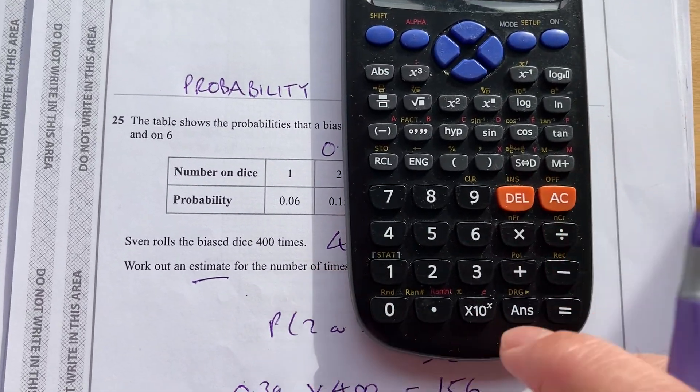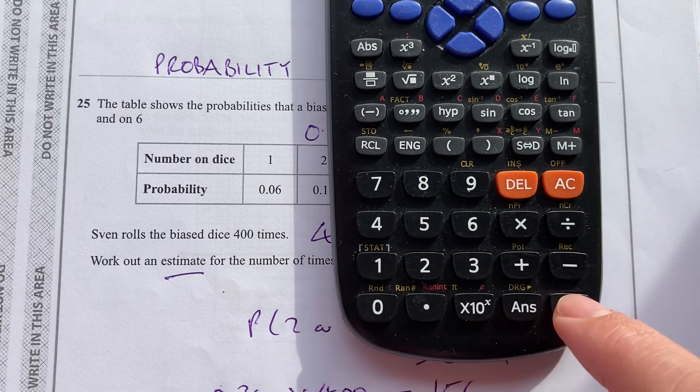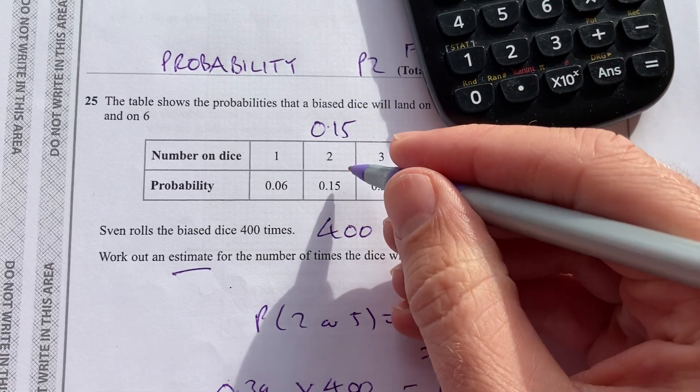Okay, I could have worked that out separately. I could have done 0.15 times 400, and got 60 for the 2.